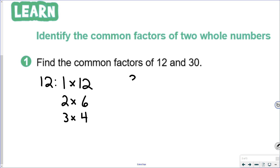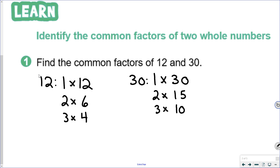Now we find our factors for 30. We start at 1, and any factor list we create is always going to start with 1 and the number. After 1, we check 2: 30 is an even number, so 2 is a factor, and it's 2 times 15. After 2, we check 3, and since the number is 30 we know 3 is a factor, and it's 3 times 10. After 3, we check 4: 2 is paired with 15, which is not even, so 4 cannot be a factor. After 4, we check 5: 30 ends in a 0, so 5 is a factor, and it's 5 times 6. After 5, we would check 6, but 6 is already in our list, so we are done.